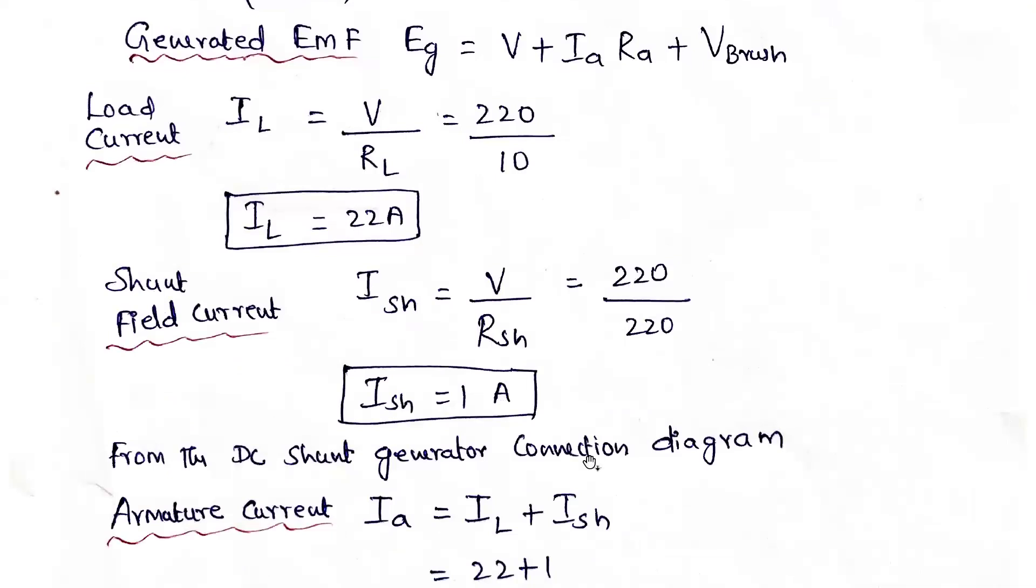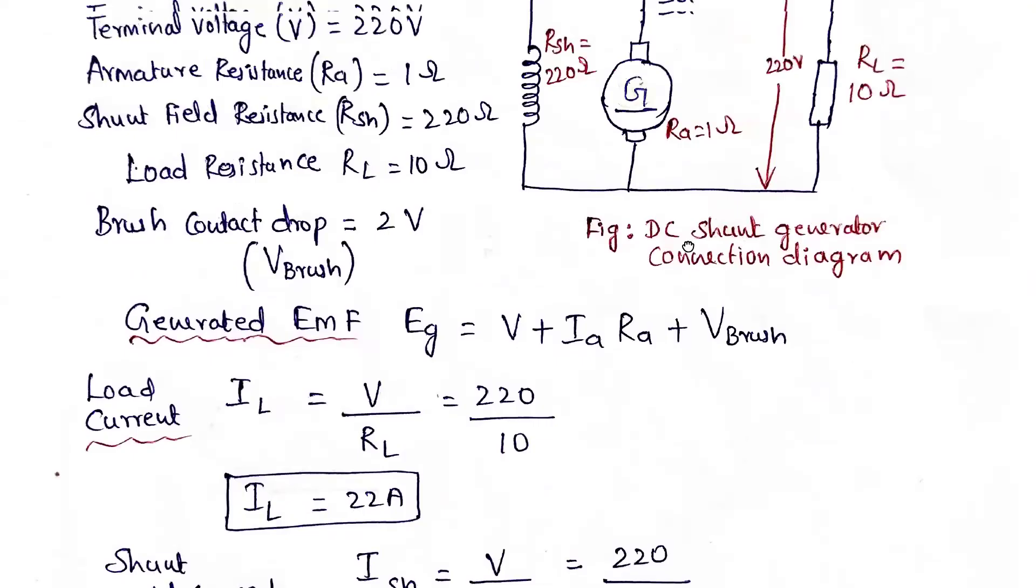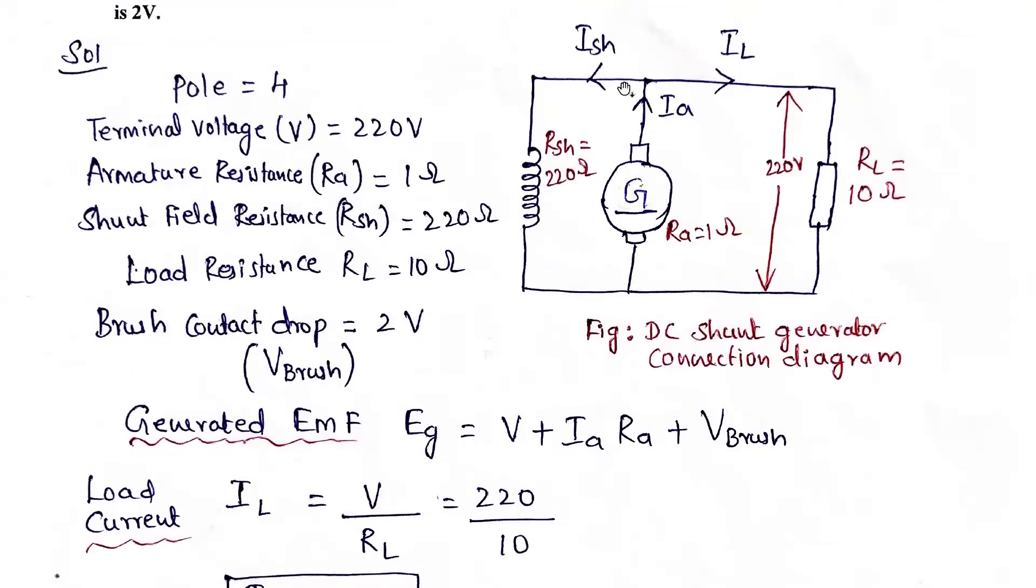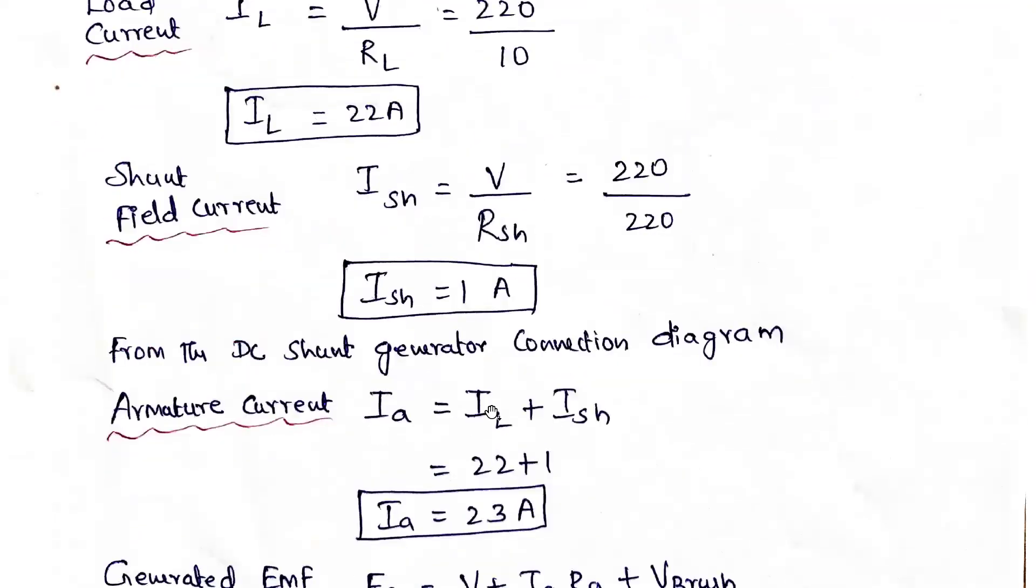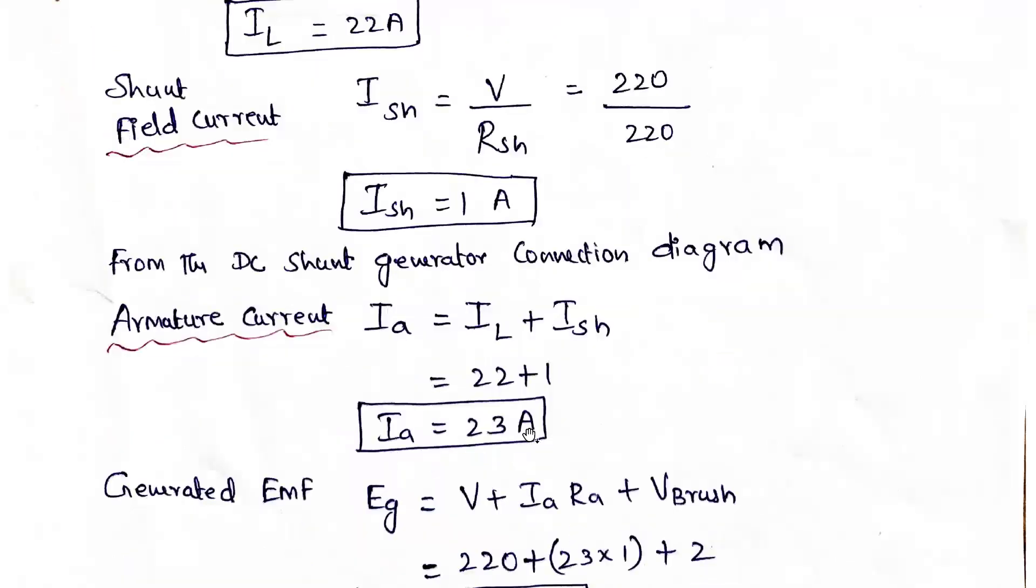From the DC generator connection diagram here, we can clearly tell that Ia equals Ish plus IL. So IL we got as 22 and Ish is 1 ampere. So Ia equals 23 amperes.